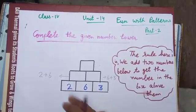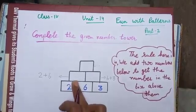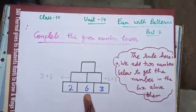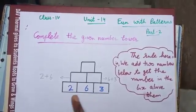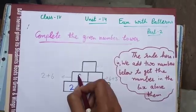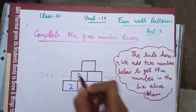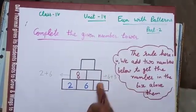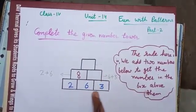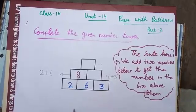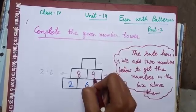Now to fill this box I will add 2 and 6. 2 plus 6, 8. Now to fill this box I will add 6 and 3. 6 plus 3, 9.